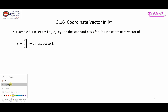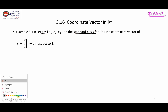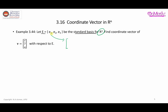Without further ado, let us look at this example. We have a basis given by the notation e — this is the standard basis. When you say standard basis in a vector space with real numbers and three components, for e1 the first component is 1 and the rest are 0; for e2 all positions are 0 except the second; and for e3 all positions are 0 except the third. That is the idea of a standard basis.